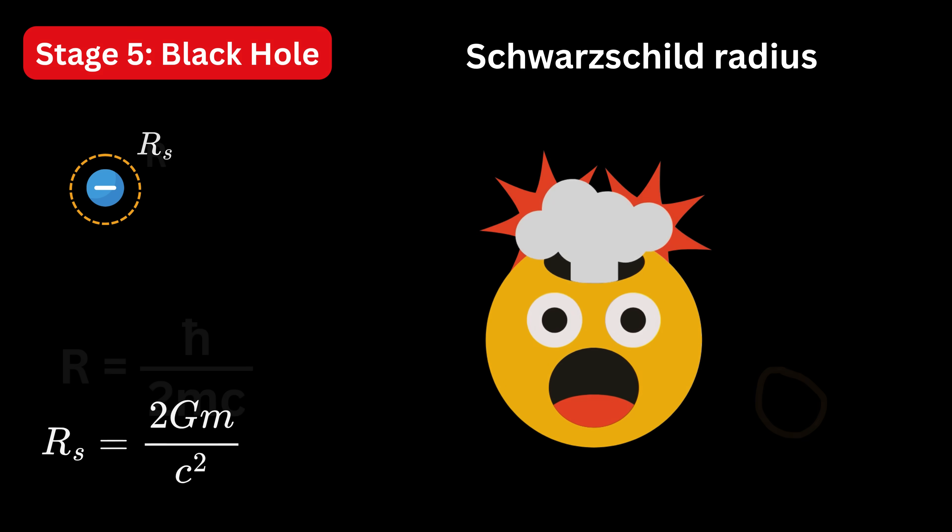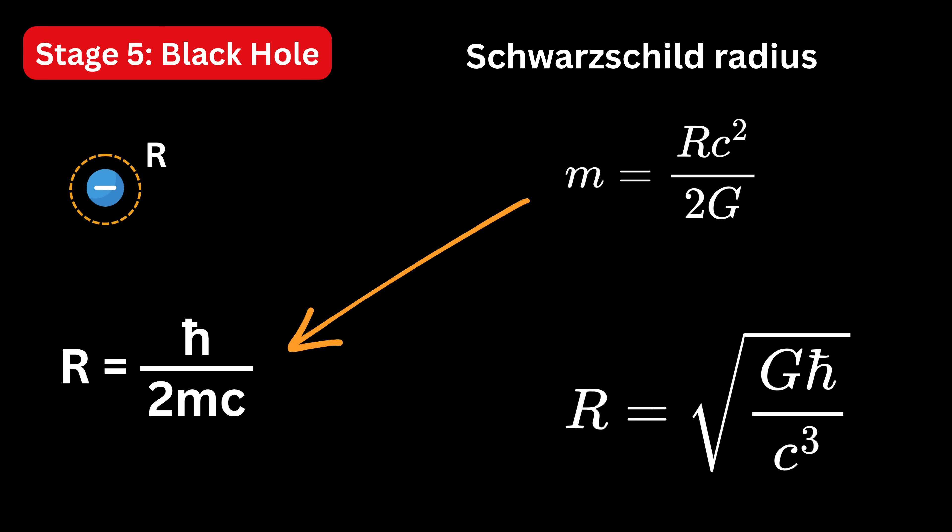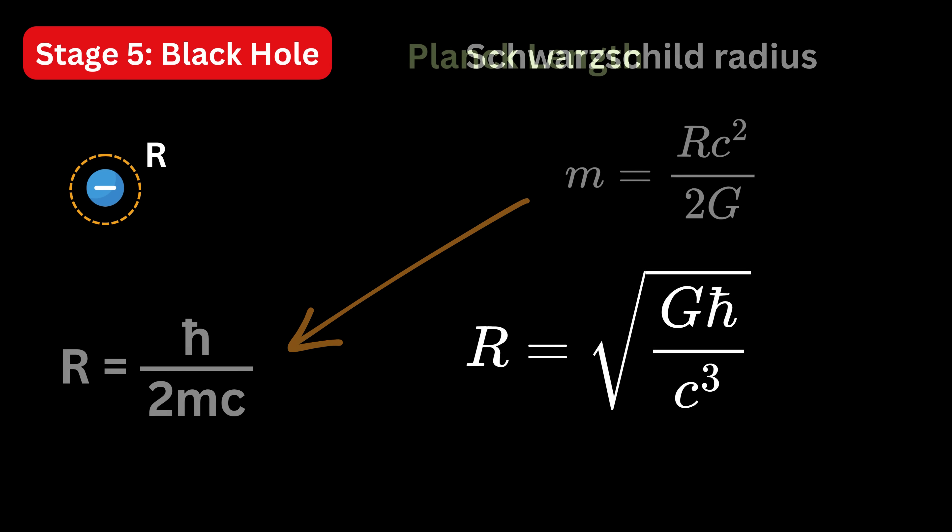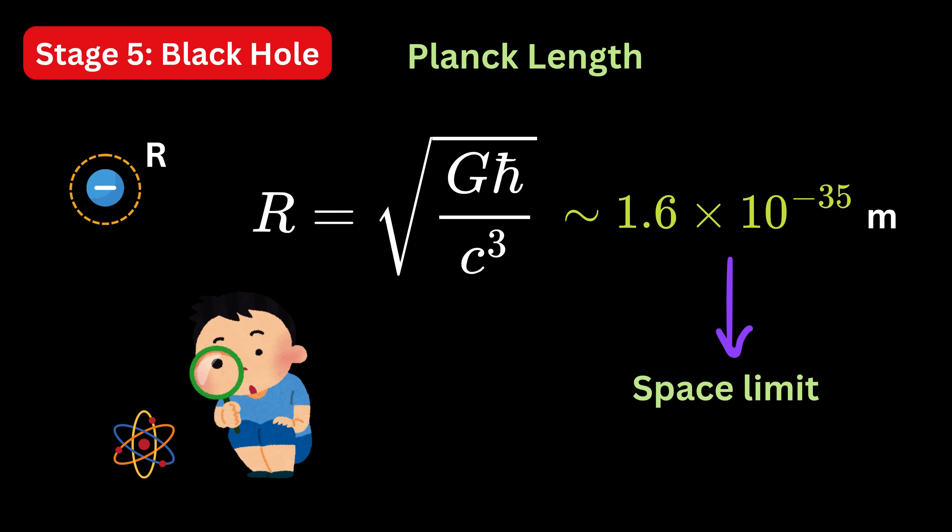Now comes the mind-blowing part. If we take that effective mass, the one needed to make gravity as strong as electric repulsion, and plug it into the uncertainty principle, we get a length scale. It comes out to the square root of G times h-bar divided by c cubed. That's the Planck length. It's roughly 1.6 times 10 raised to minus 35 meters. That's 1 followed by 34 zeros after the decimal point. So this Planck length is not just super small. It is fundamentally unreachable. Try to explore or examine anything smaller than this, and the very act of exploration creates a black hole, hiding what you wanted to see.